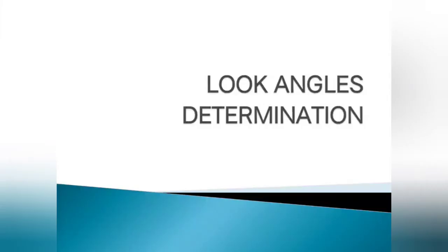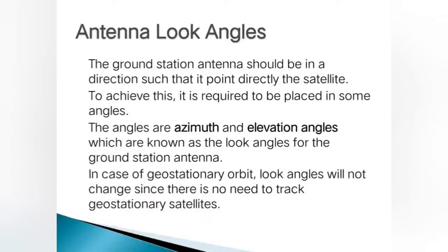In this video we will see about look angle determination. The ground station antenna should be in some direction such that it can point directly at the satellite. To achieve this direction, it is required to be placed at some angles. Those angles are azimuth and elevation angles, which are known as the look angles for the ground station antenna.